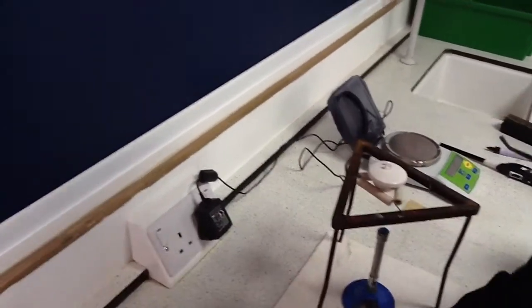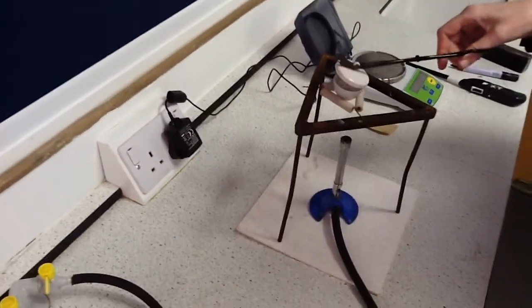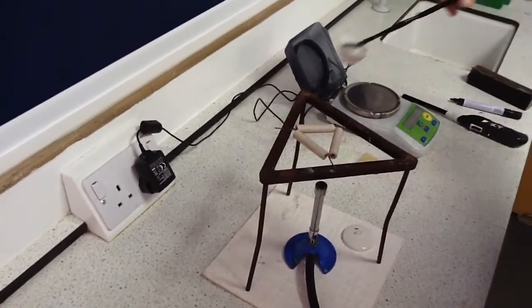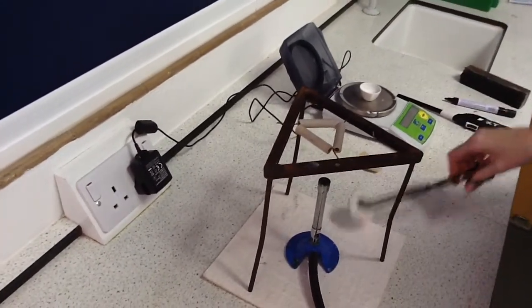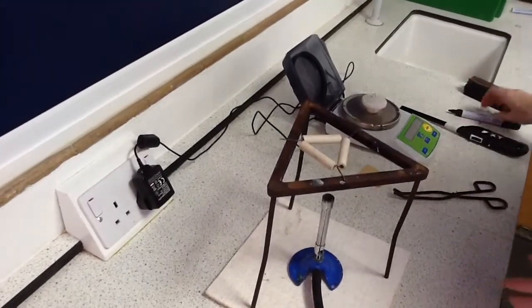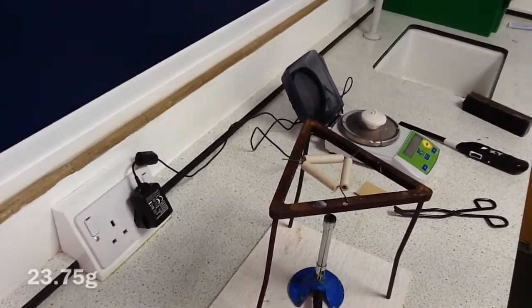So it's time to turn off the Bunsen burner and now measure the mass of the crucible, the lid and the magnesium oxide. So I'm weighing that. That comes to 23.75 grams.